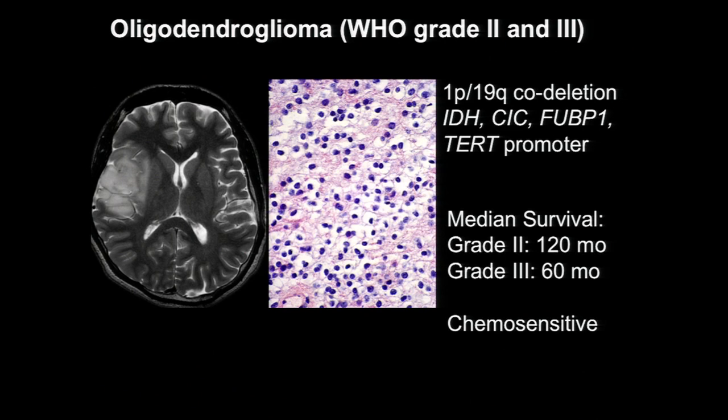Oligodendrogliomas, on the other hand, are characterized as infiltrative tumors with round, regular nuclei, perinuclear halos — the so-called fried egg or honeycomb appearance. They're characterized by IDH mutations, and 1p19q codeletion is their genomic signature, or at least of a subset. They also have CIC mutations, FUBP1 mutations, and mutations in the TERT promoter. They generally have a better prognosis, grade for grade, than astrocytomas, and are deemed to be more chemosensitive as a group.